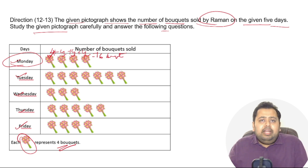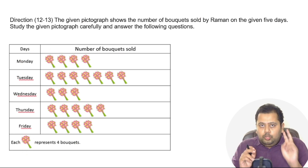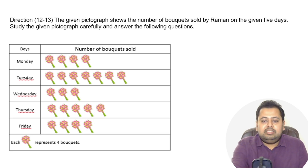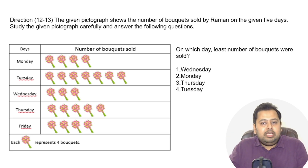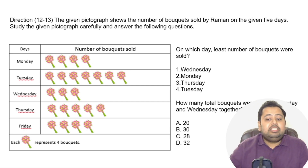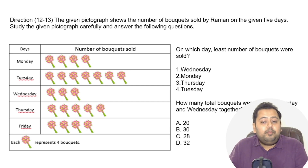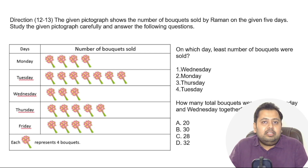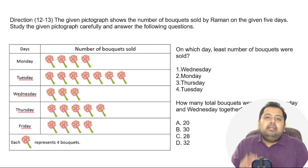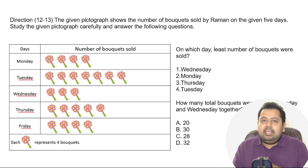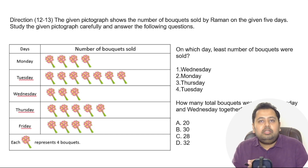This is how you have to interpret the data. Now, two questions: first, on which day was the least number of bouquets sold — Wednesday, Monday, Thursday, or Tuesday? Second, how many total bouquets were sold on Monday and Wednesday together? Please pause the video now and solve the questions, then we'll go to the solution.